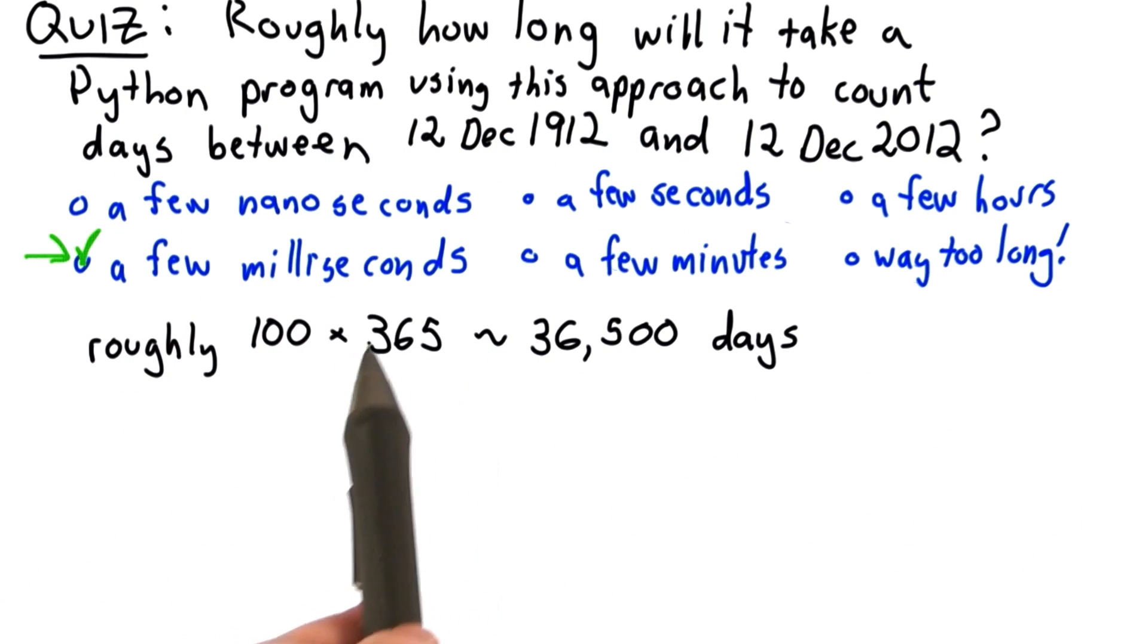We have 100 years. A year is roughly 365 days. If it's a leap year, it's one more. But we're going to have somewhere around 36,000 days.